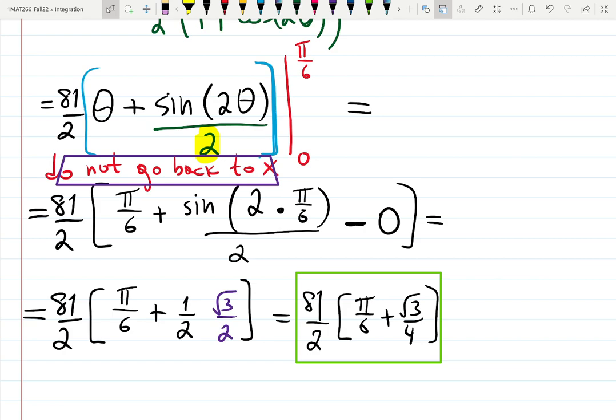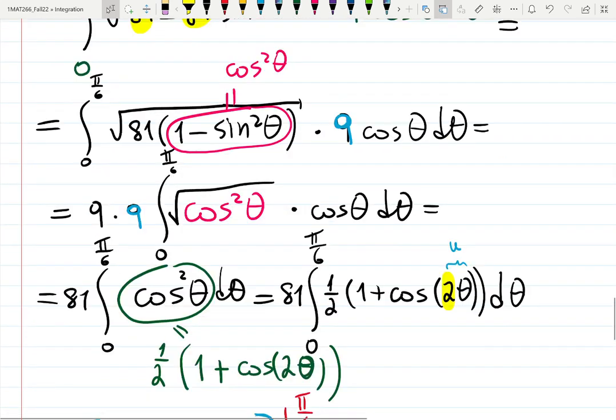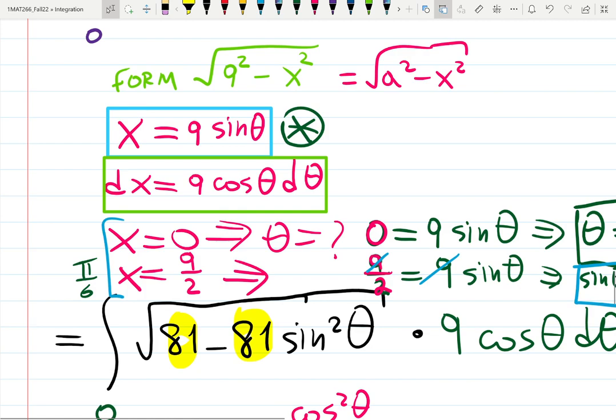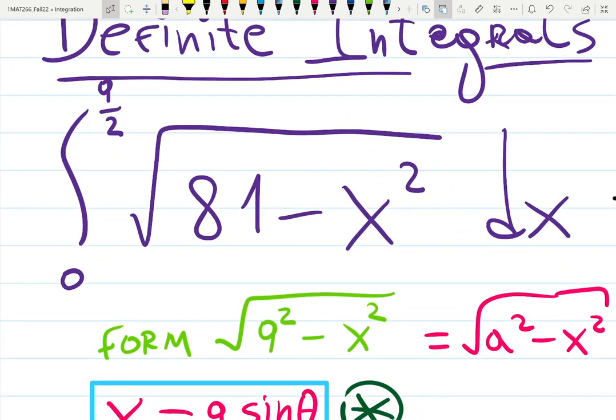So it also matches the units. I told you units matter. If you're working with theta as an angle, you better plug in angles in radians or degrees. If you're working with distances, which we had at the first place, that was x with some kind of units, then it's 0 and 9/2.